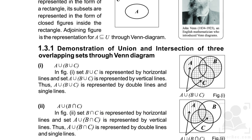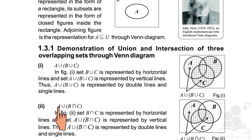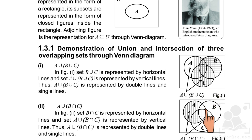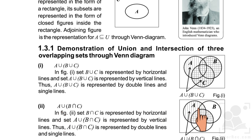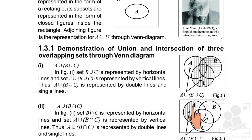A union B union C is represented by double lines and single lines. Next we have A union (B intersection C). First we find the intersection of B and C, then find its union with set A. B intersection C is represented by horizontal lines — the common area between B and C. A union (B intersection C) is represented by both vertical and double lines.